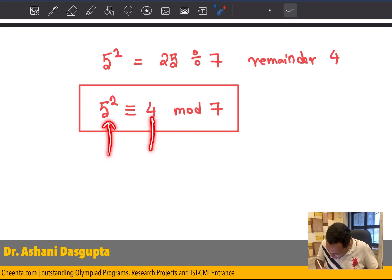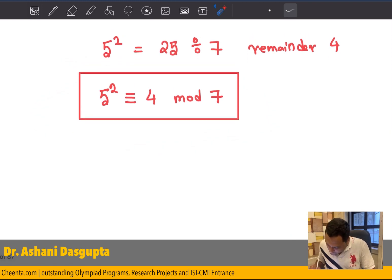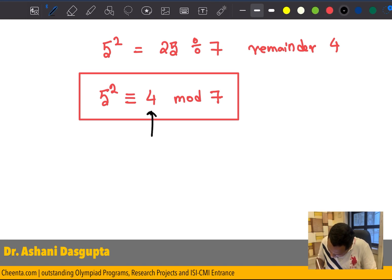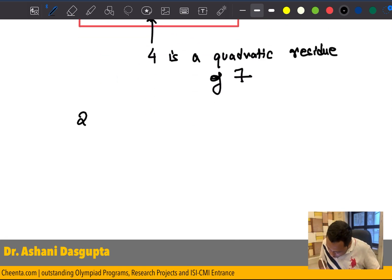The difference of left and the right is divisible by this number. It is a shorthand way of writing this. So, what do we get? We get, again, 4 is a quadratic residue of 7. So, we found two different quadratic residues, 2 and 4.